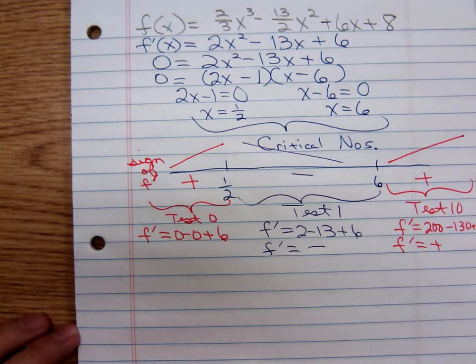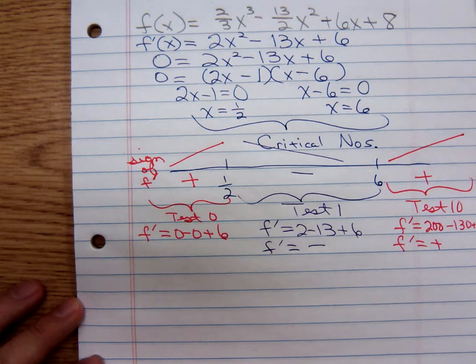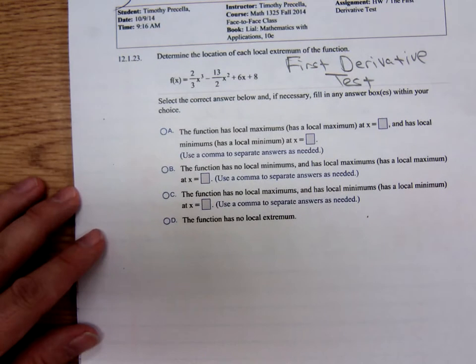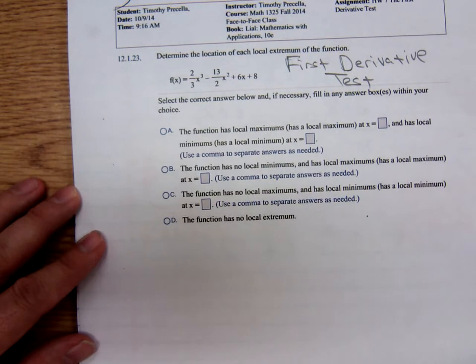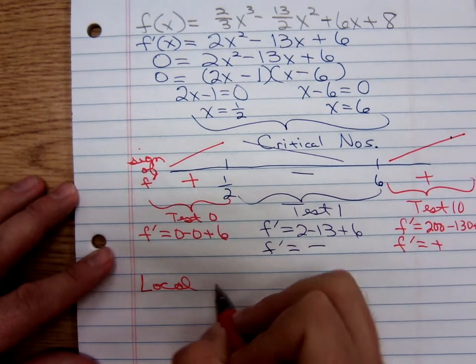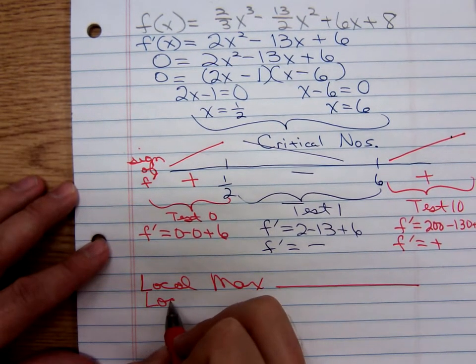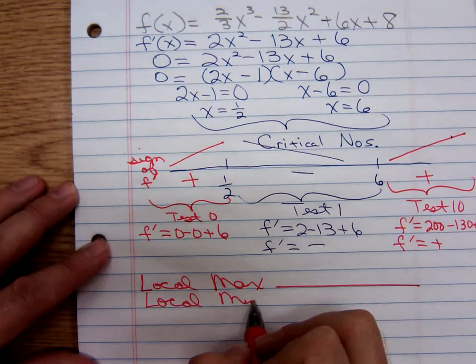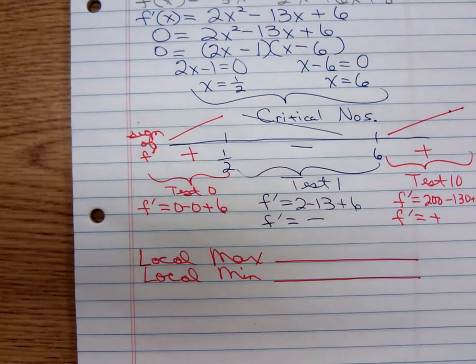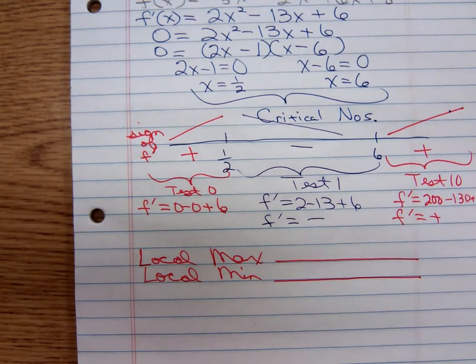So, let's summarize what we need. What are they asking for? Let me look back over here. They're asking for local extrema. So, local maximum and local minimum. Well, we have a local maximum. It occurs when x is equal to one-half.